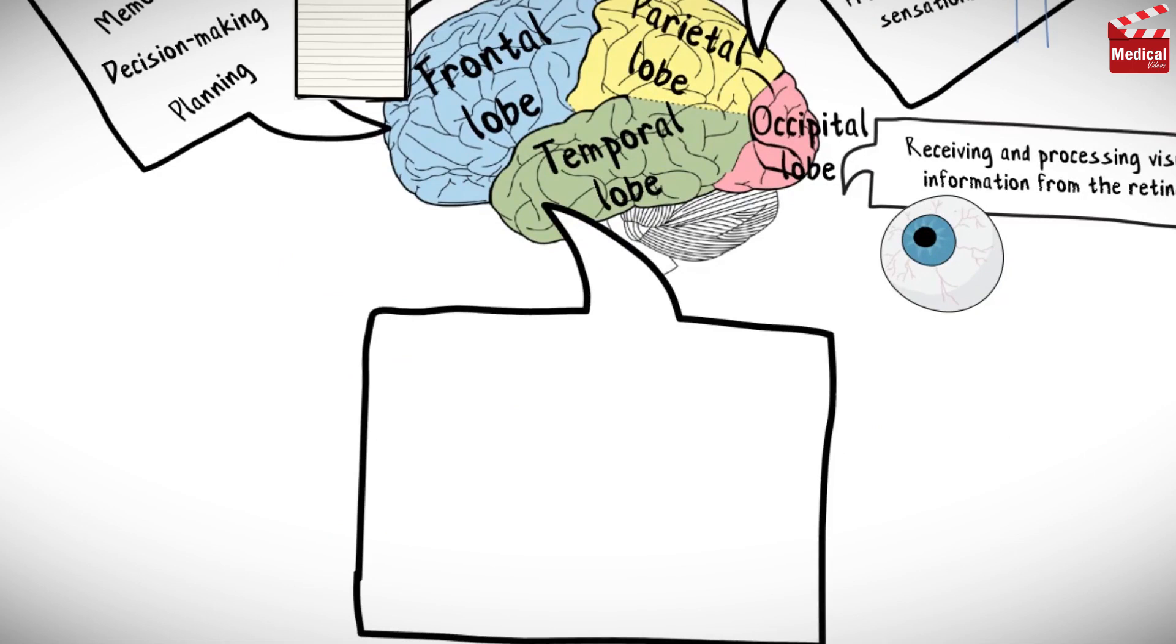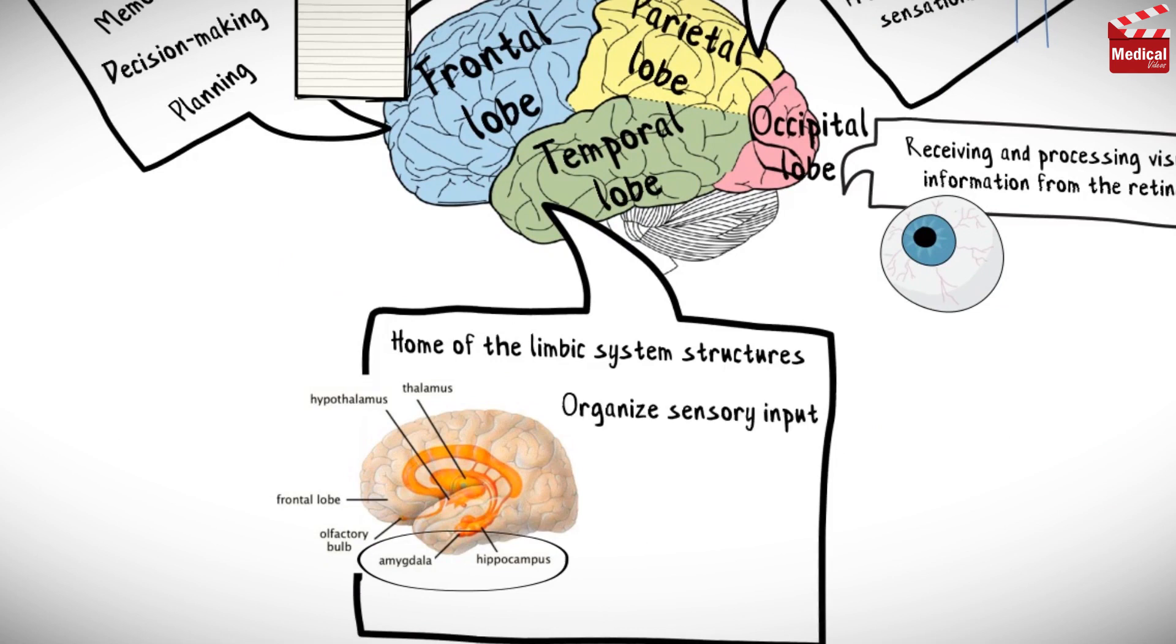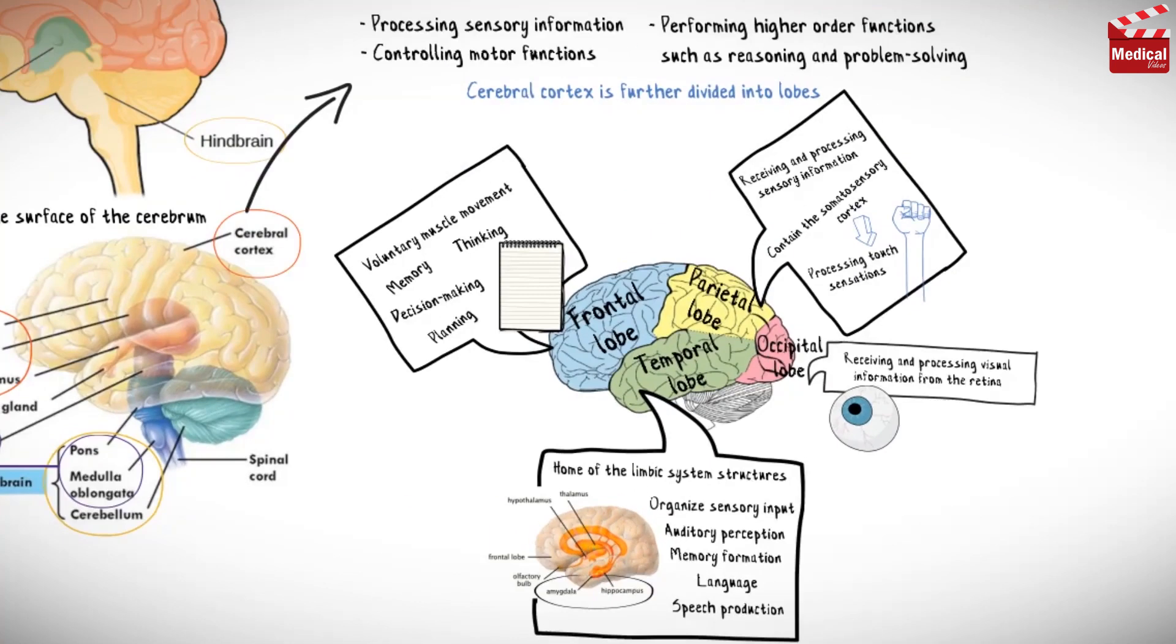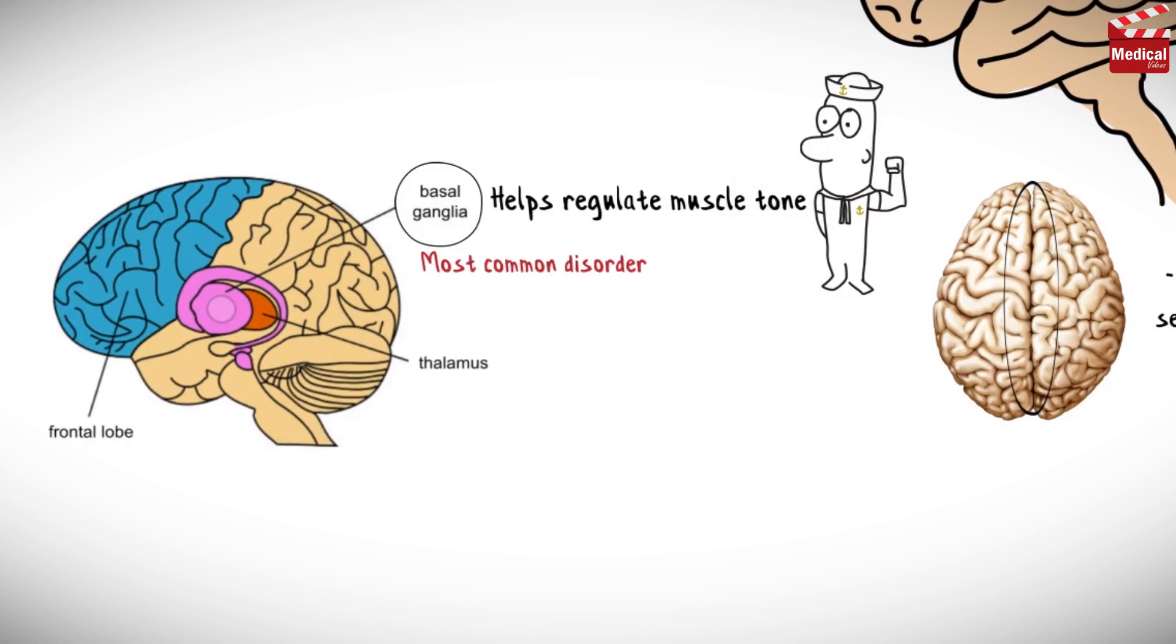Temporal lobes are the home of the limbic system structures, including the amygdala and hippocampus. These lobes organize sensory input, as well as aid in auditory perception, memory formation, and language and speech production. Deep in the cerebrum the basal ganglia exist, which helps regulate muscle tone. The most common disorder of the basal ganglia is Parkinson's disease.